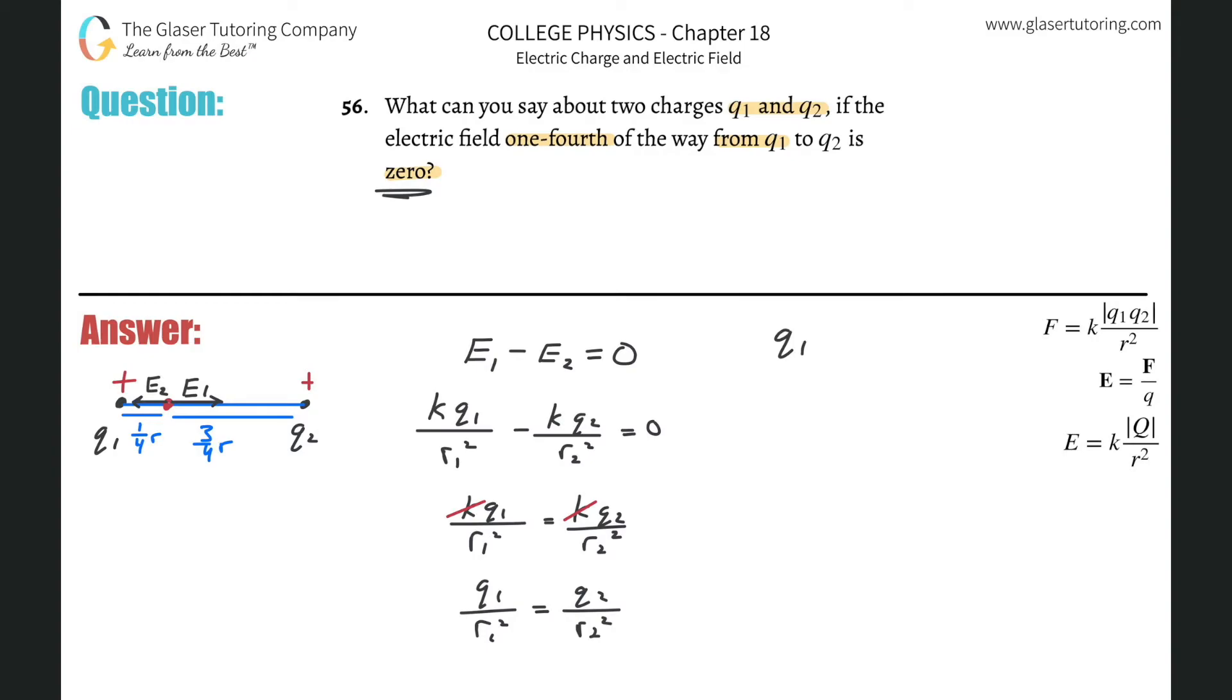So it's going to be q one all over r one. And we said r one is going to be one fourth r. Okay, so one fourth r and let's square that. And that's then going to be equal to q two all over r two, which is three fourths r squared.